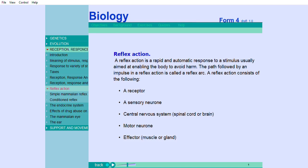A reflex action consists of the following: a receptor, a sensory neuron, central nervous system (that is, spinal cord or brain), motor neuron, and effector (muscle or gland).